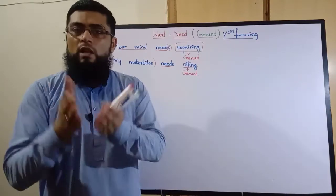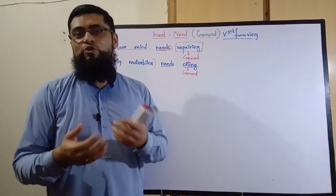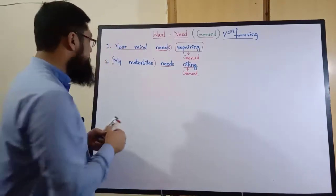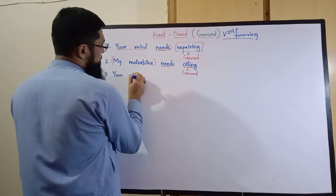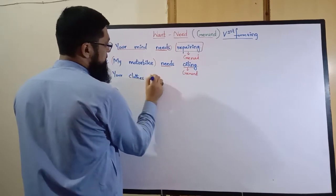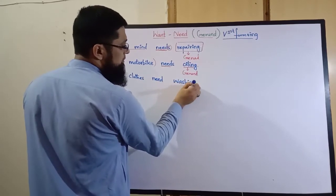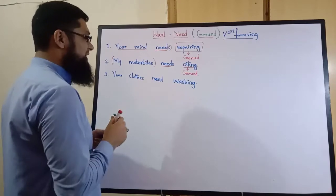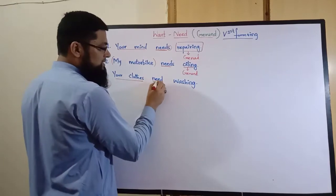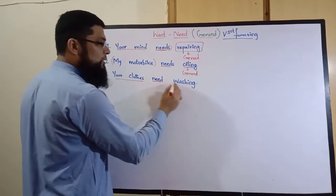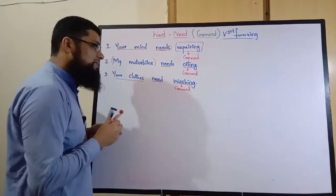اگلی مثال: 'آپ کے کپڑے دھلنے والے ہو گئے ہیں' یعنی آپ کے کپڑوں کو دھلنے کی ضرورت ہے۔ اس کا انگریزی ترجمہ ہے: 'Your clothes need washing.' اس میں subject 'clothes' plural تھا، اس لیے simple 'need' لکھا — s کا اضافہ نہیں کیا۔ آخر میں gerund 'washing' استعمال کیا۔